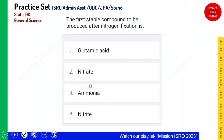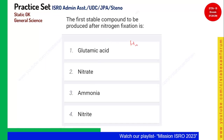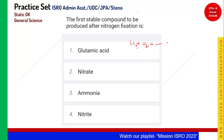The first stable compound of nitrogen fixation is what? Nitrogen fixation takes hydrogen, oxygen, and certain other elements and ions, and produces NH3. So basically it is nothing but ammonia. Ammonia is the correct answer.